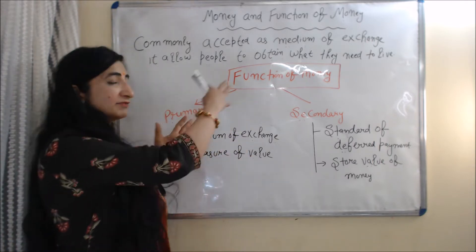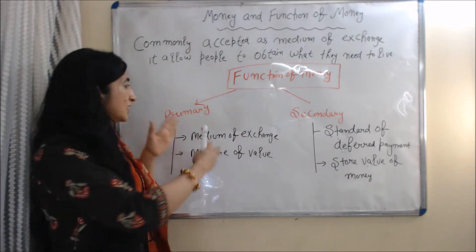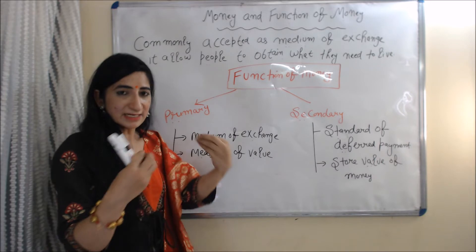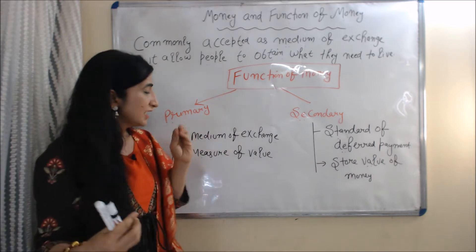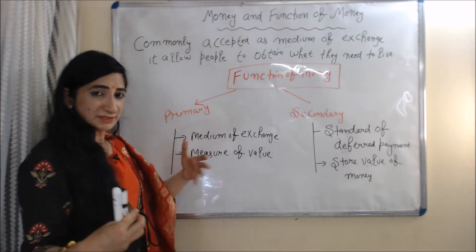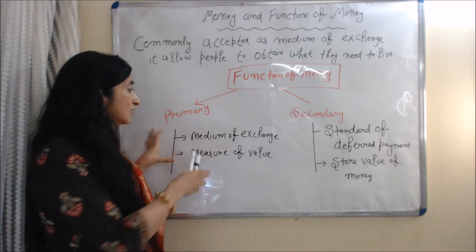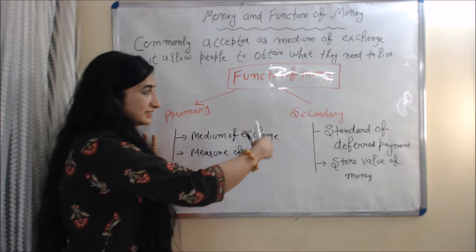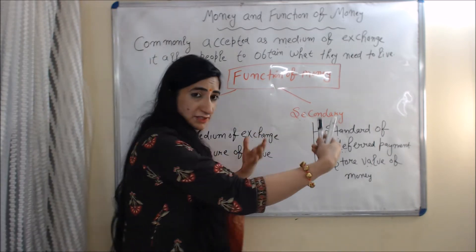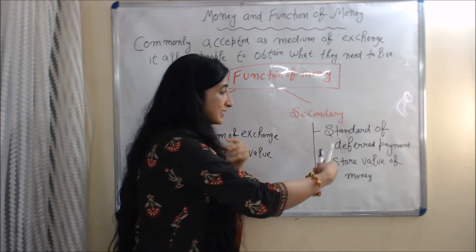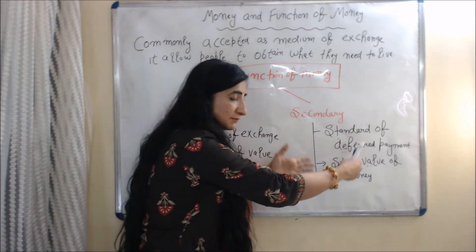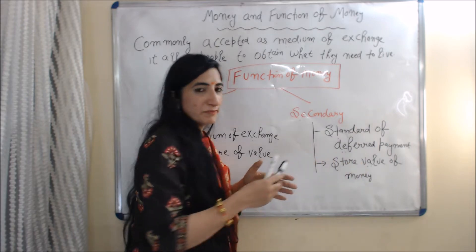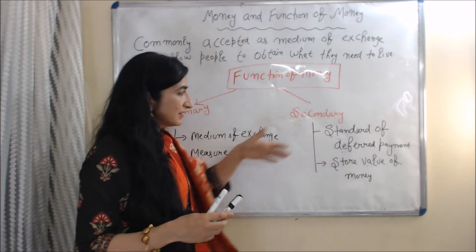Money basically has two functions: primary function and secondary function. In the primary function, we include medium of exchange and measure of value. In the secondary function, we include standard of deferred payment and store of value. We will discuss each function one by one.